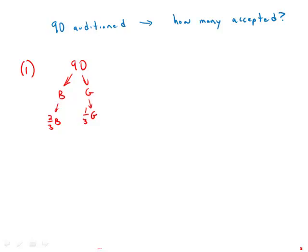But we have no idea of the relative breakdown. We have no idea if it was just six boys who auditioned and 84 girls or 84 boys who auditioned and only six girls or 45 and 45. We have no idea of the breakdown. So by itself, this statement does not allow us to answer the question.